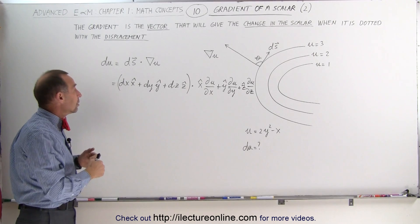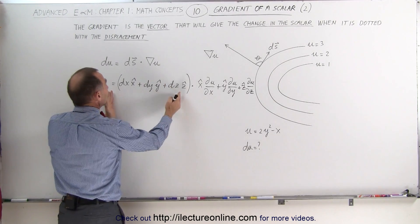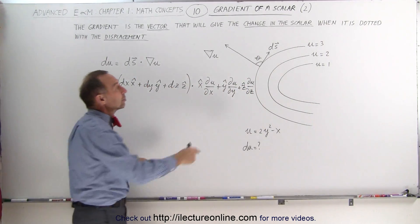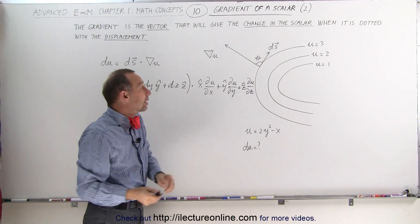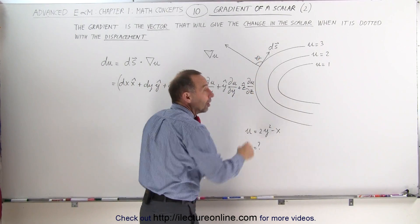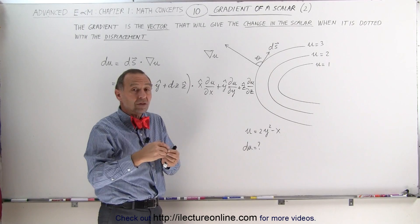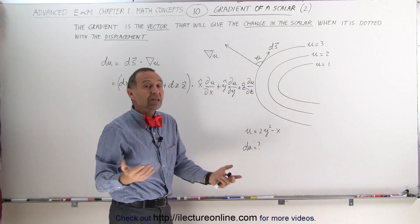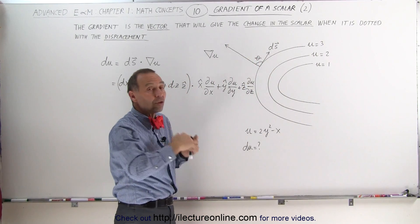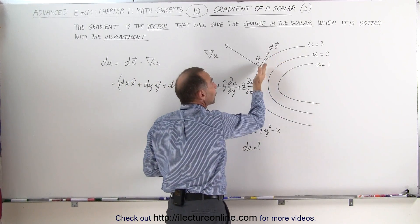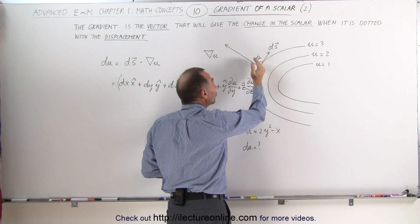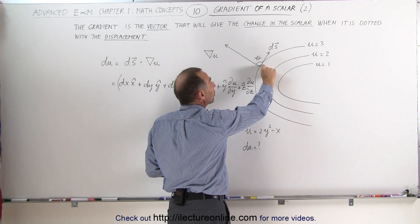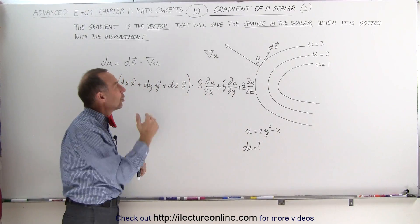Now, the dot product is also equal to the magnitude of ds times the magnitude of the gradient of u times the cosine of the angle theta between them. Right away you realize that if the angle is equal to 90 degrees, the cosine of 90 degrees is equal to 0, so u doesn't change if I travel in a direction perpendicular to the gradient. This makes sense because the gradient is always perpendicular to the lines of constant value for u, and therefore if I travel at 90 degrees to the gradient, u stays constant.